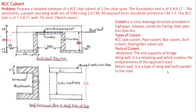Hello students, let us take up a problem on estimation of RCC slab culvert. A culvert is a cross-drained structure provided in highways, railways, canals, etc., having a clear span less than 6 meters. Various types of culverts are provided based on the span, type of road, terrain conditions, and so on. The various types include RCC slab culvert, pipe culvert, box culvert, arch culvert, steel girder culvert, etc.